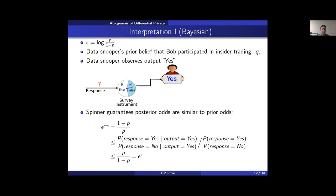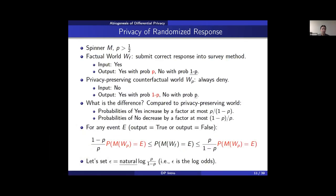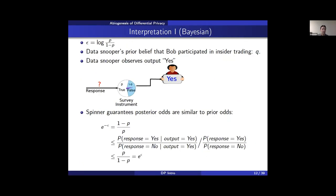Let's see how this translates into meaningful privacy guarantees. We give the respondent a name — call him Bob — and introduce a new character, the data snooper (sometimes called an attacker or adversary). The data snooper sees the output of the randomized response and wants to infer specific information about Bob's response. A Bayesian snooper would have a prior probability that Bob is an insider trader and could compute prior odds.